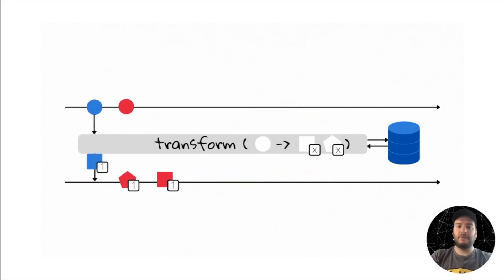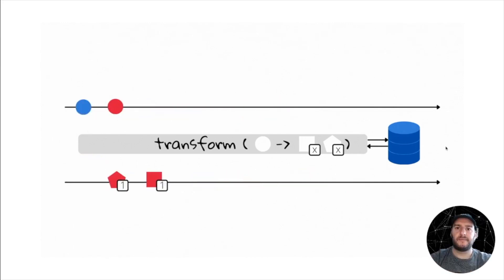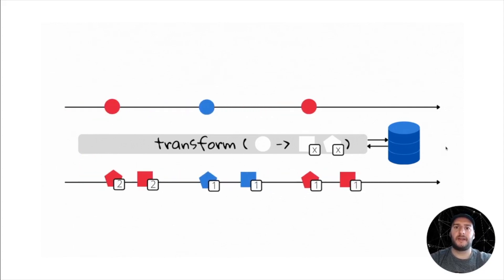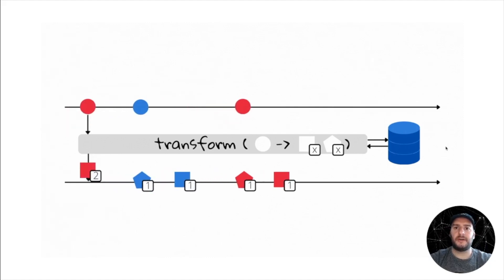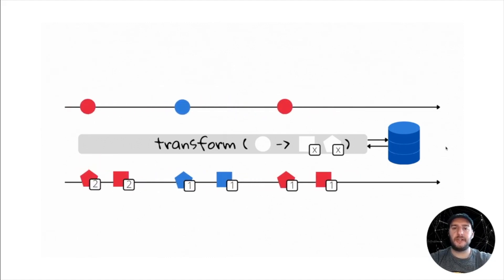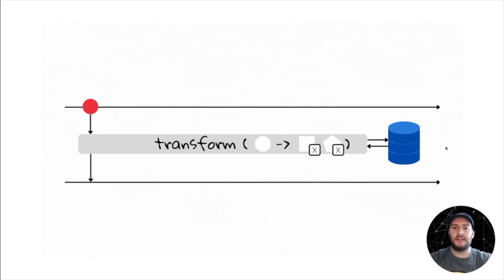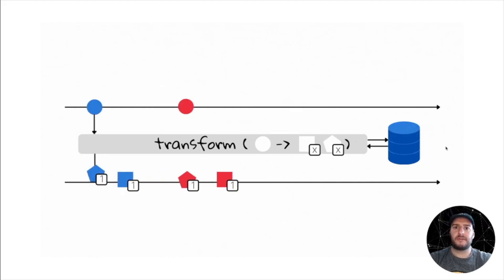We currently don't have any tutorials on the processor API, but in the future we will have some and we will discuss more about this transformation operation. What you should know about this operation is that it's used for very specific and special use cases. You should try to avoid it and use map or flat map or map values or flat map values at all costs. But if you really need to use this, then it's a tool that Kafka Streams provides.